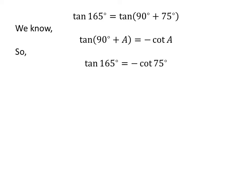So tangent of 165 degrees is equal to minus cotangent of 75 degrees. Again, 75 degrees is equal to 30 degrees plus 45 degrees. So tangent of 165 degrees is equal to minus cotangent of 30 degrees plus 45 degrees.